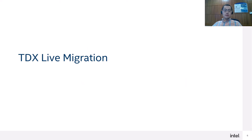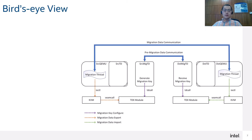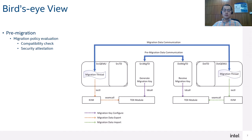Let's have a look at more details about the TDX migration. Looking at the whole picture from an elevated view: a source TD — the guest TD that needs to be migrated — has a micro TD associated with it. The micro TD will assist the migration process. Before the migration starts, the micro TD needs to do some migration policy evaluation, including a compatibility check and a security attestation. The goal is to ensure that the destination physical environment is migratable and secure.